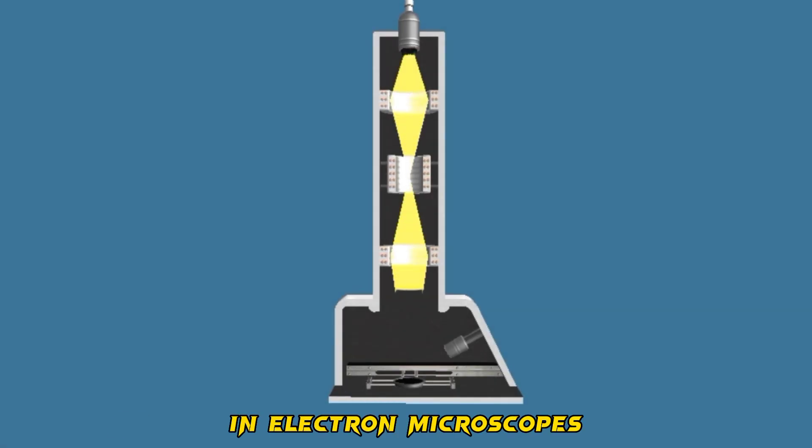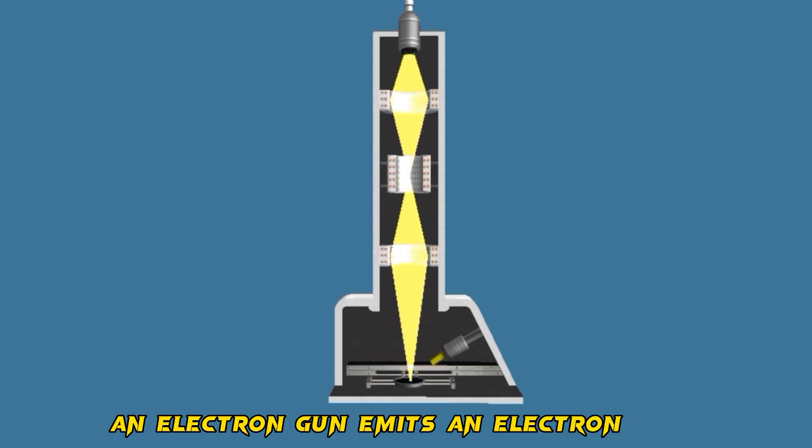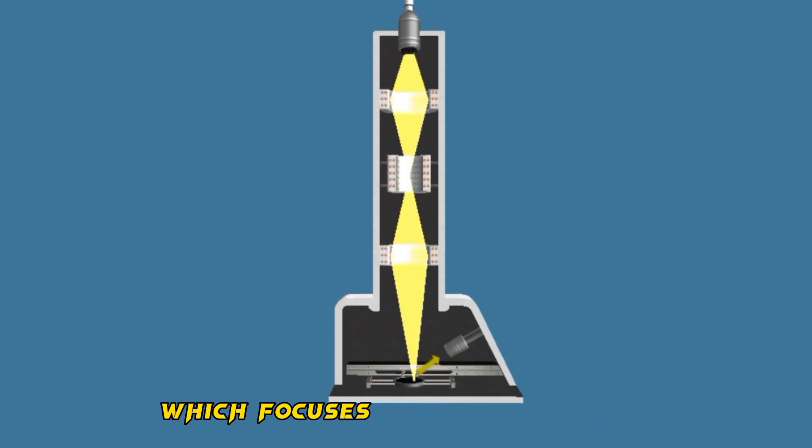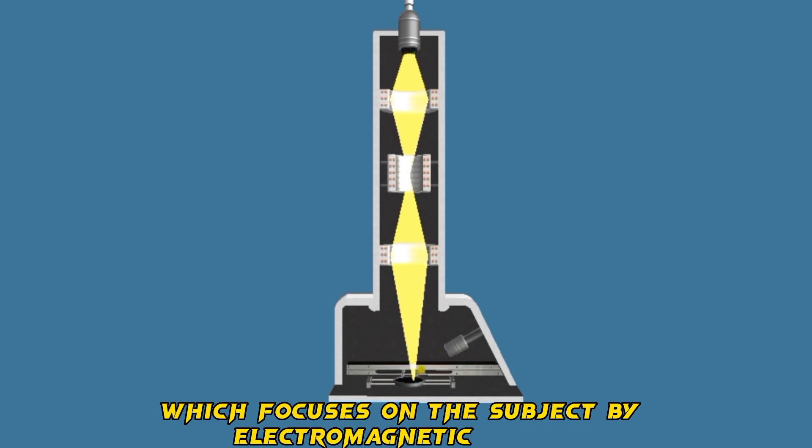In electron microscopes, an electron gun emits an electron beam, which focuses on the subject by electromagnetic lenses.